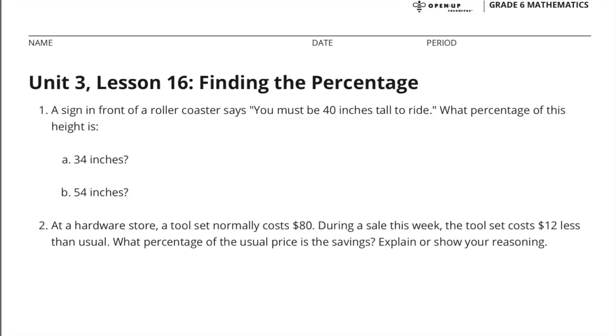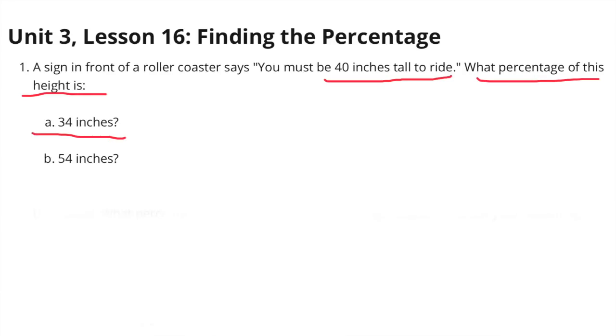Unit 3 Lesson 16: Finding the Percentage. Number 1 — A sign in front of a roller coaster says you must be 40 inches tall to ride.